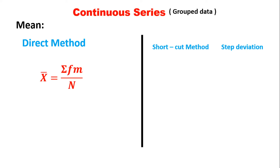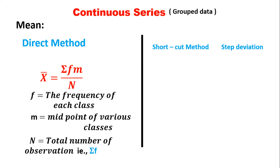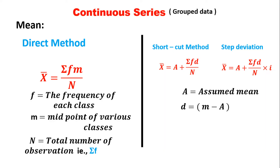For mean, there are three methods: direct method, shortcut method, and step deviation method. Direct method: x-bar equals sigma(fm) divided by n, where f is the frequency of each class, m is the midpoint of each class, and n is the total number of observations. Shortcut method: x-bar equals A plus sigma(fd) divided by n, where A is the assumed mean, and d equals m minus A. Step deviation method uses d equal to m minus A divided by i, then multiplied by i.